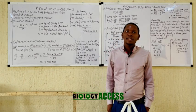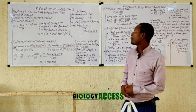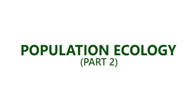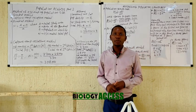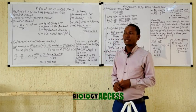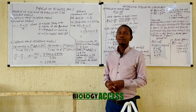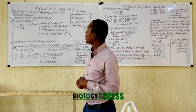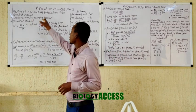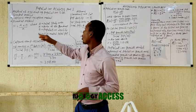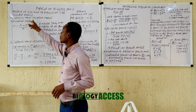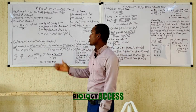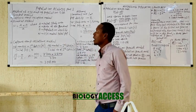Welcome to Biology Access. In today's class we'll be taking part two of population ecology. If you are new to this channel, please subscribe and press the notification button. In this part we'll be looking at methods of estimating population size — the two major ways being the quadrat method and the capture-mark-recapture method.